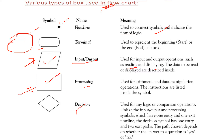Then we have the decision symbol — a diamond shape. This is used for any logic or comparison operation. It has one entry point and can have multiple exit points. It works on yes and no outcomes.